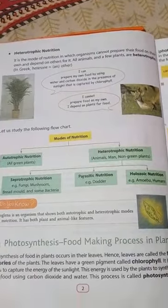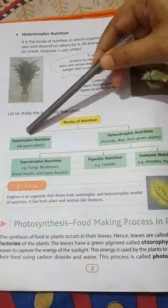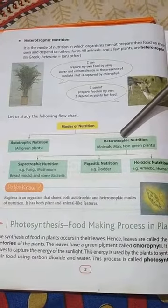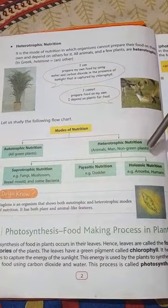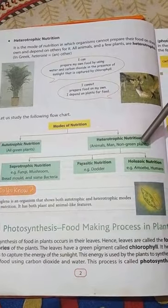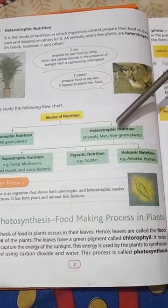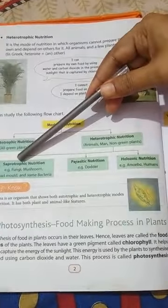There is a flow chart on your screen in which modes of nutrition are classified into autotrophic nutrition — for example, all green plants — and heterotrophic nutrition, examples being animals, humans, and non-green plants also. Non-green plants do not have chlorophyll, so they cannot prepare their food and are also heterotrophs.